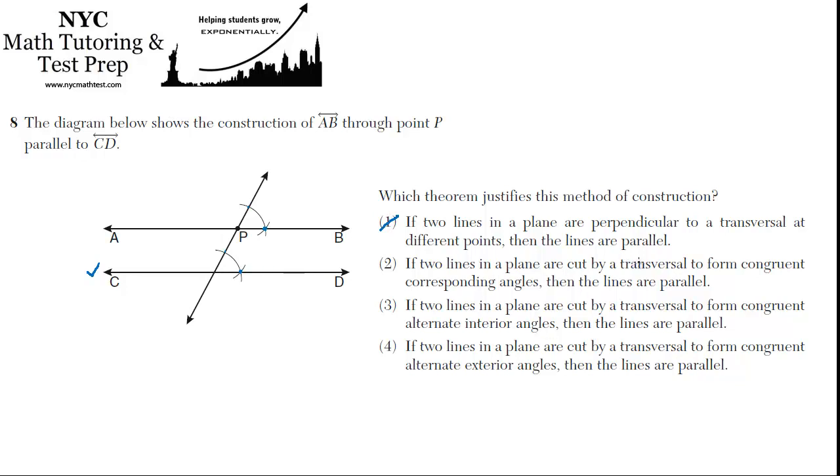If two lines in a plane are cut by a transversal to form congruent corresponding angles, then the lines are parallel. This is it. Because these two angles are congruent corresponding angles. So that's exactly right.